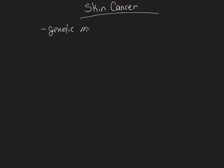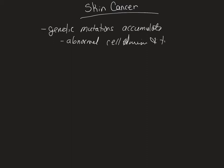So what is skin cancer? Skin cancer is when there are genetic mutations or changes that accumulate in cells sufficiently that you get abnormal cell division and tissue growth. With any type of cancer, you're looking at the accumulation of five to six mutations that affect the regulation of the particular genes that help with whether a cell will go through apoptosis or whether a cell will increase the amount of mitosis it goes through. You're going to look at this a lot more in pathophysiology, but that's a general explanation.